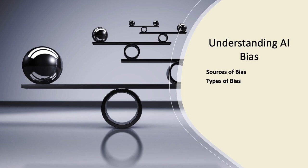The next are the types of bias. These include sampling bias, measurement bias, algorithmic bias, and cultural bias. Each type affects the AI decision-making process, leading to skewed or unfair outcomes.